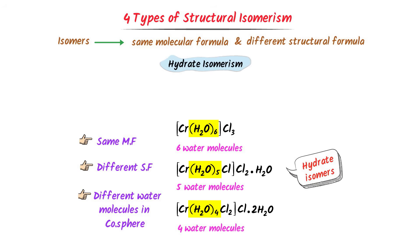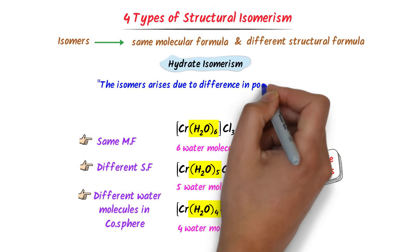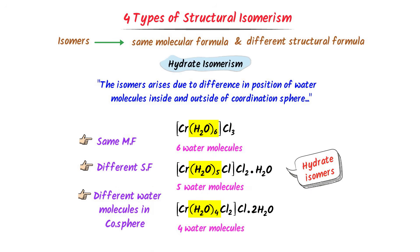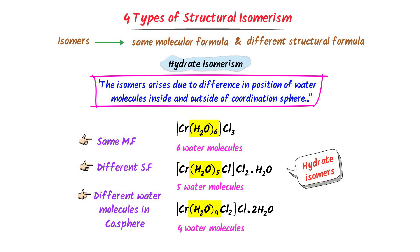Hydrate isomerism is defined as: isomers that arise due to a difference in the position of water molecules inside and outside the coordination sphere are called hydrate isomers. This is the second type of structural isomerism.